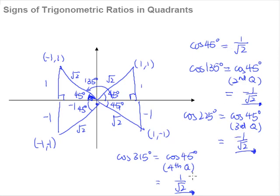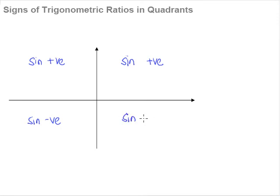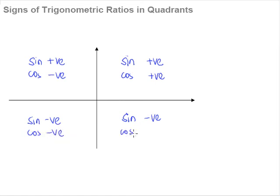So we start to realize something rather interesting. What actually changes is only the sign of our answer — whether we get a positive or negative result. For sine: first quadrant gives a positive answer, second quadrant also gives a positive answer, but the moment we reach the third quadrant, the sine ratio becomes negative, and the same happens in the fourth quadrant. For cosine: first quadrant is also positive, but the second quadrant becomes negative, the third quadrant is also negative, and the fourth quadrant returns to positive.